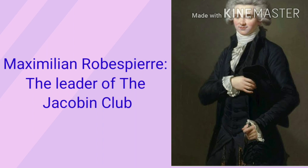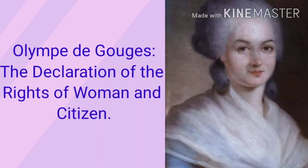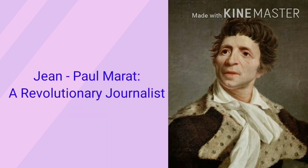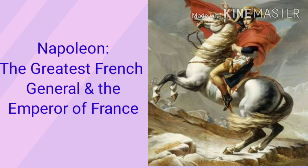Maximilien Robespierre was the leader of France who followed the policy of repression, and his tenure is known as the Reign of Terror. Olympe de Gouges was the first feminist who wrote the Declaration of the Rights of Women and Citizens. Jean-Paul Marat was a revolutionary journalist who said that wealth should not influence the law. Napoleon was a French general who declared himself to be the emperor of France in 1804.